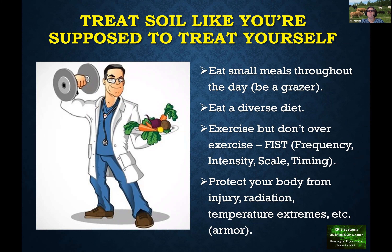Instead of thinking about how short our growing season is, how can we maximize the amount of time we have plants growing? How can we get 365 days of the year? How can we get it so that even in Canada, we're using 250 to 290 days to actually be growing food for the soil? It's not always about just growing food for us, but growing food for the soil.